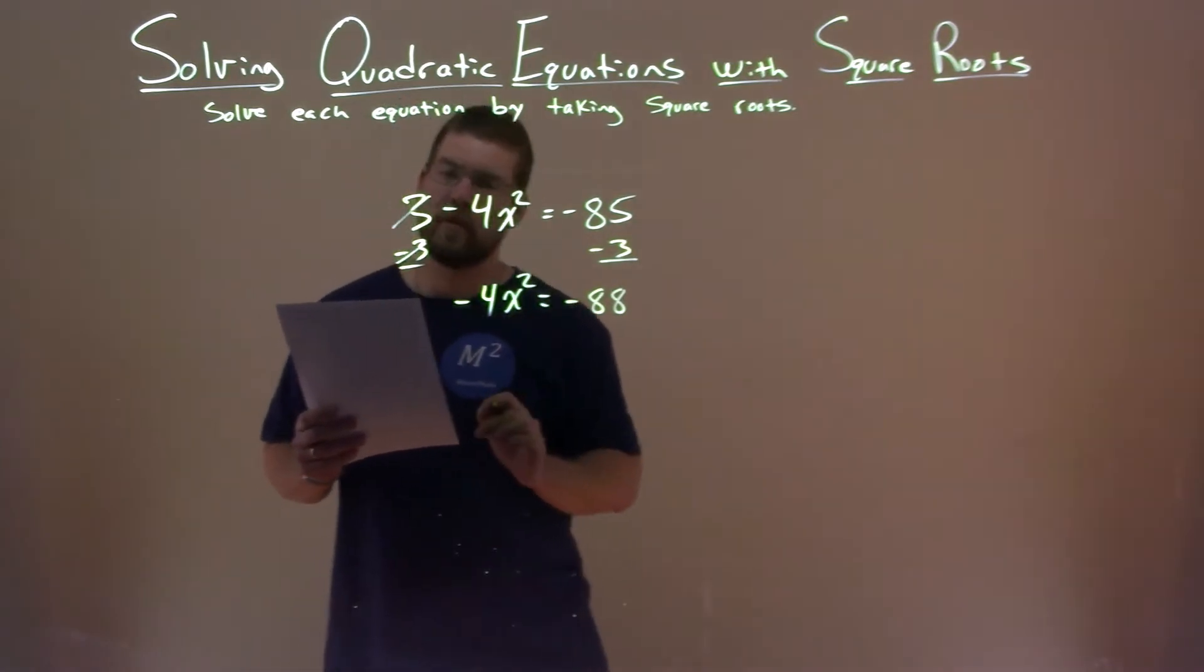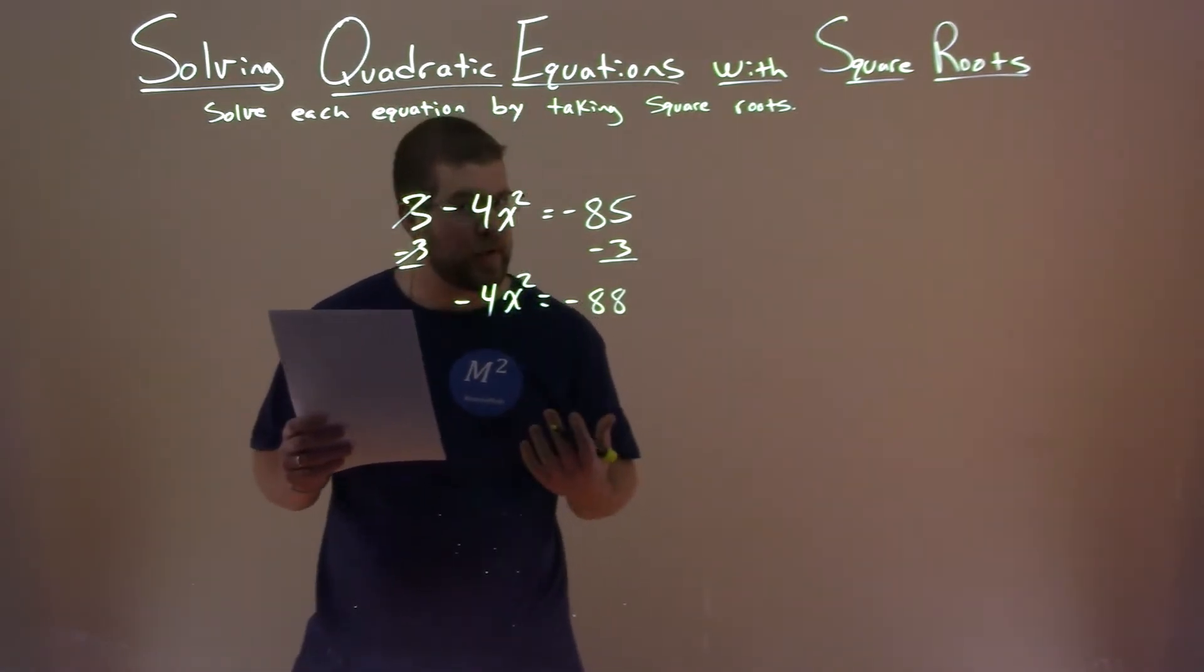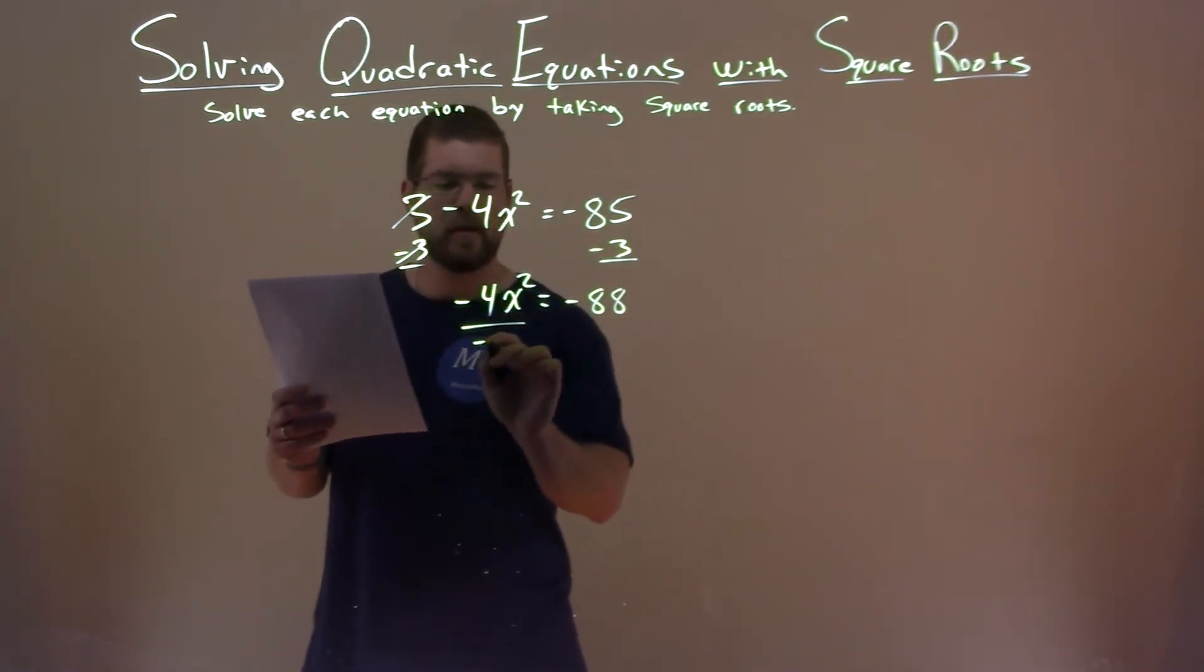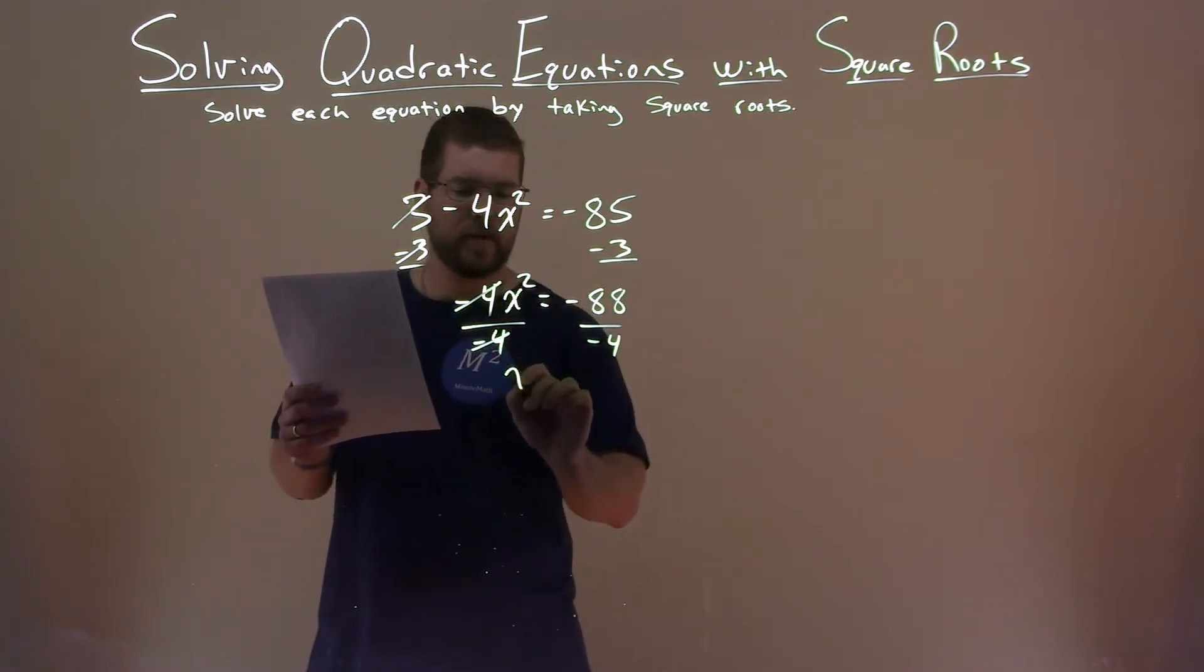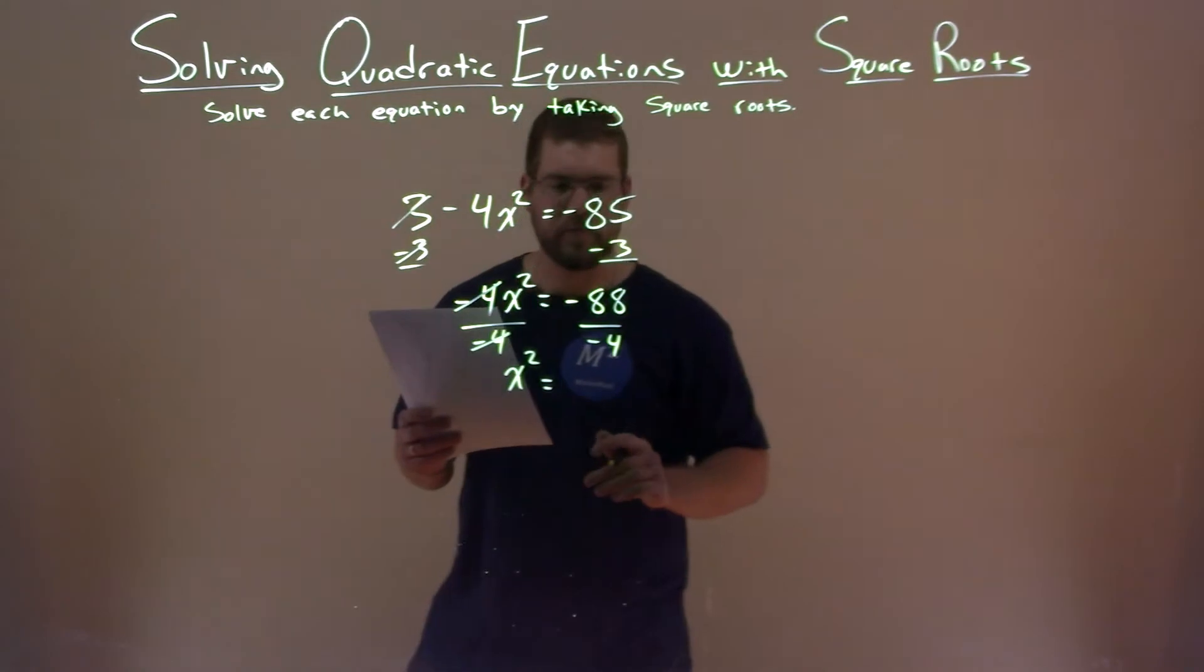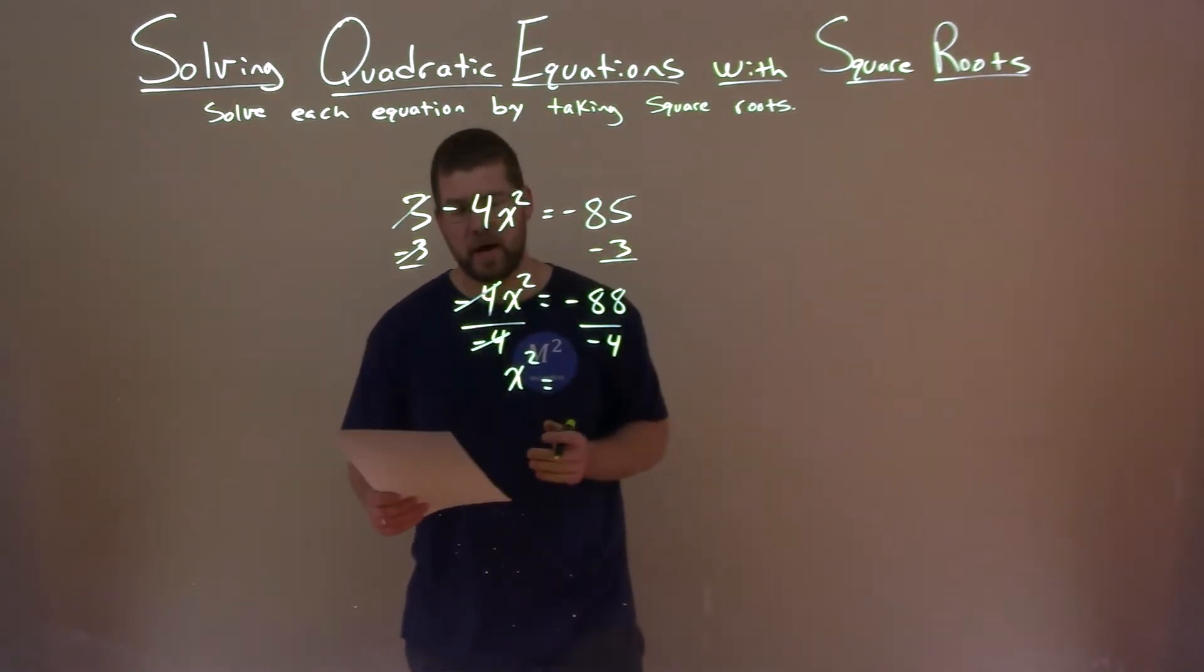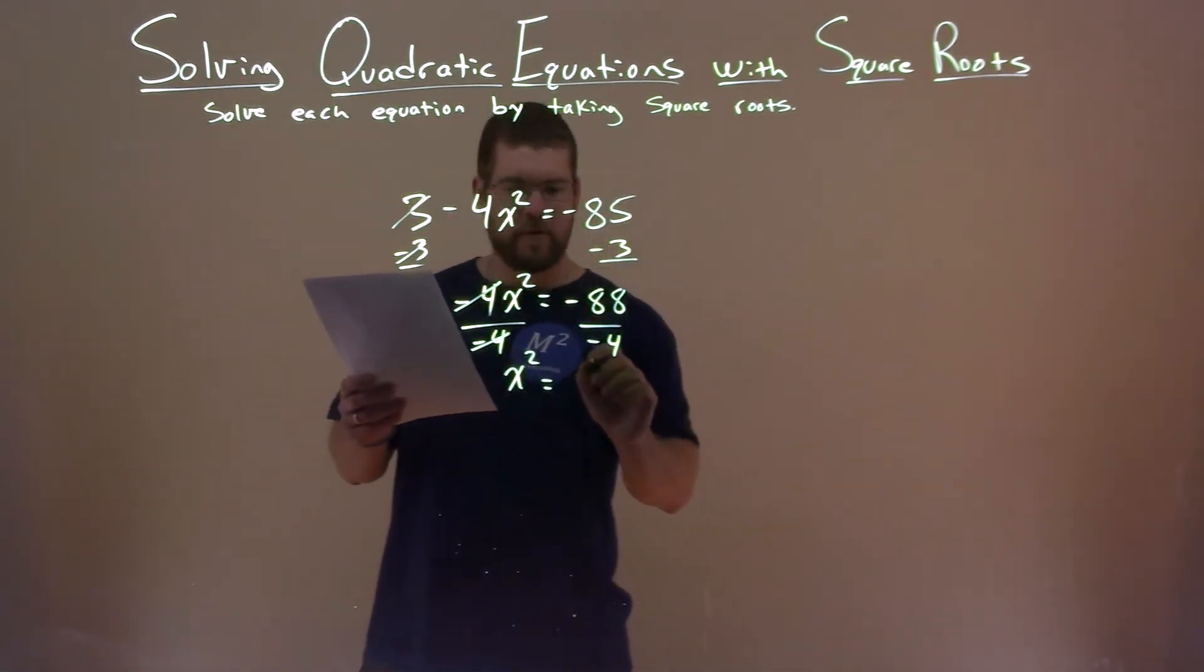Now, negative 4 is being multiplied by x. Opposite of multiplication is division. Divide both sides by negative 4. These cancel, giving me x squared by itself, is equal to negative divided by negative is positive, so 88 divided by 4 is 22.